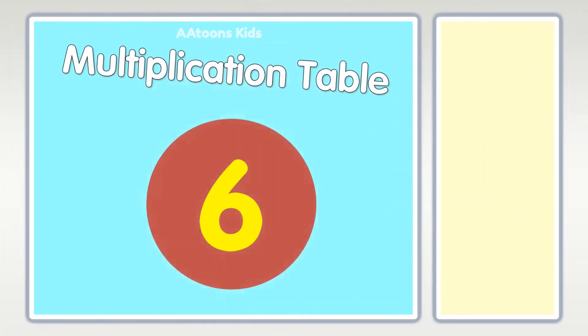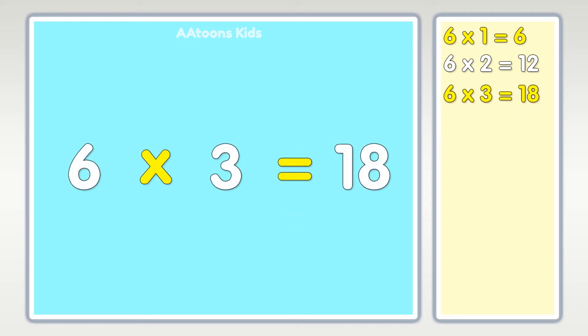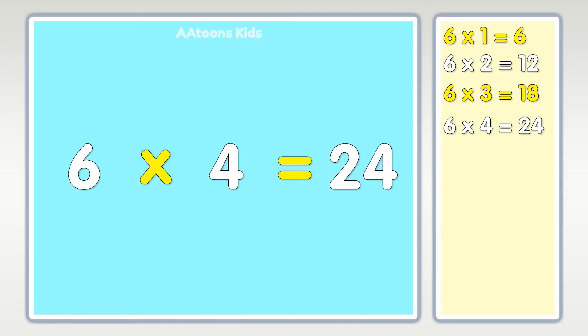Table of six: six times one is six, six times two is twelve, six times three is eighteen, six times four is twenty-four, six times five is thirty, six times six is thirty-six.